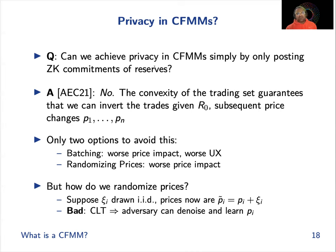Randomizing prices isn't so easy either. Suppose we just added IID random noise to each price. If there's a central limit theorem effect, the adversary can denoise and learn the price, so we've made it not as good as we had hoped.